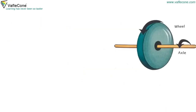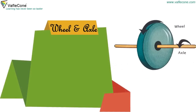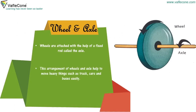Wheel and axle — wheels are attached with the help of a fixed rod called an axle. This arrangement of wheel and axle helps to move heavy things such as trucks, cars and buses easily.